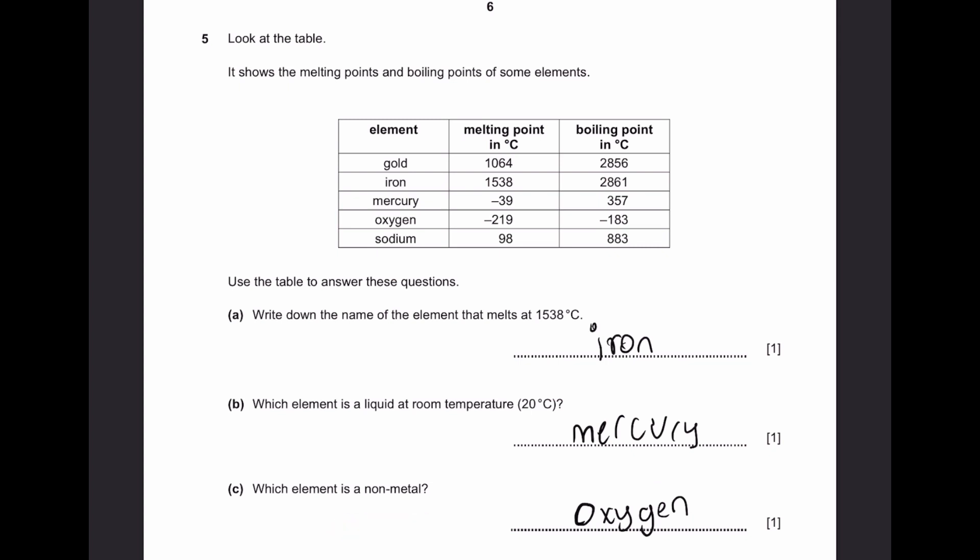Part C. Which element is a non-metal? Non-metals have extremely low melting points and boiling points. Oxygen has negative 219 as a melting point and negative 183 as a boiling point, which is extremely low. So that is the non-metal oxygen.